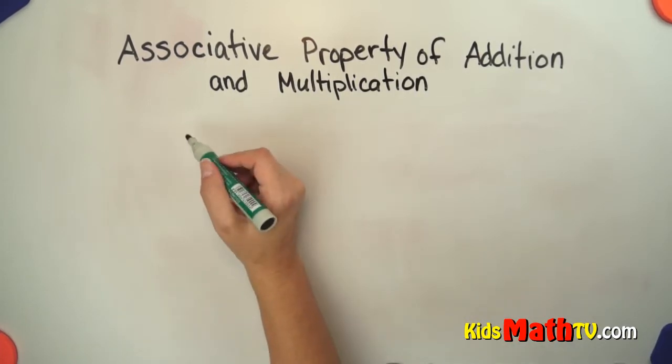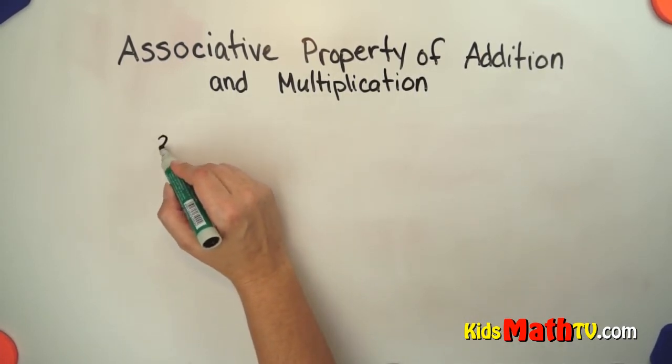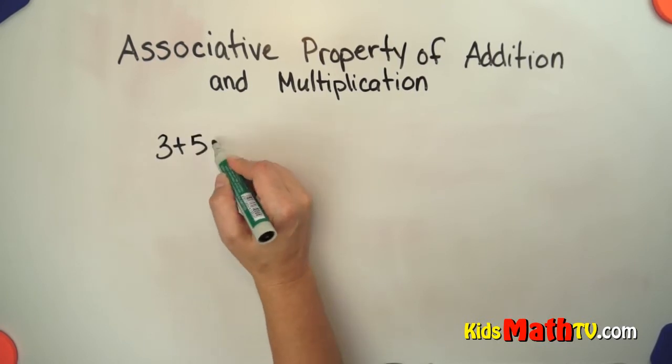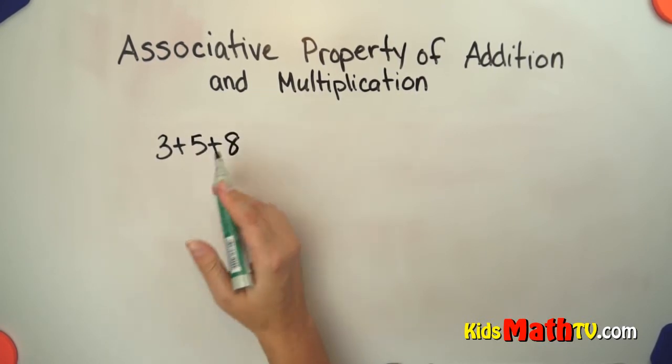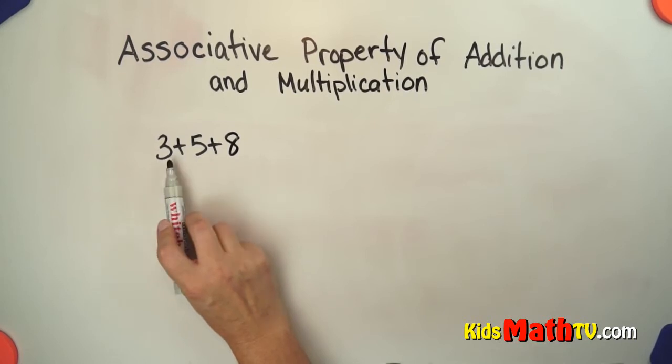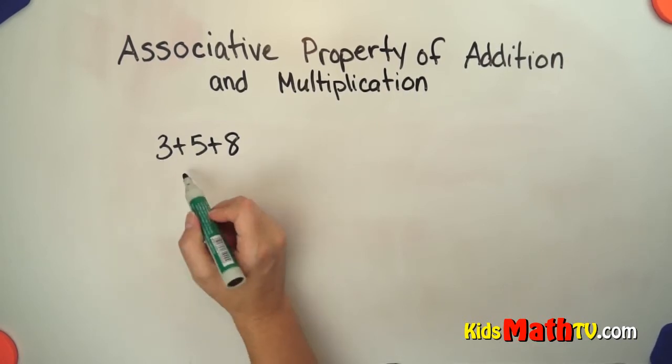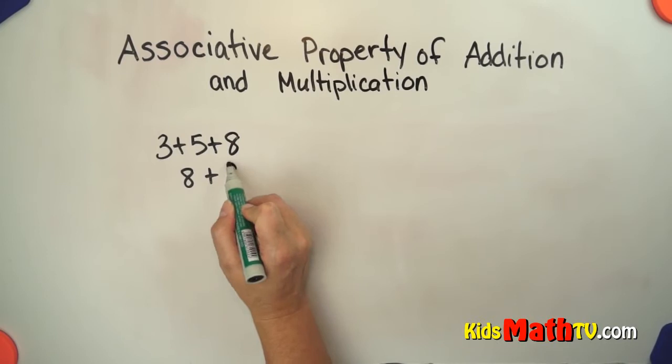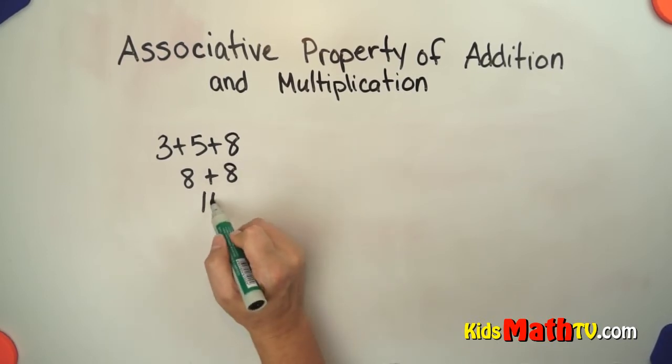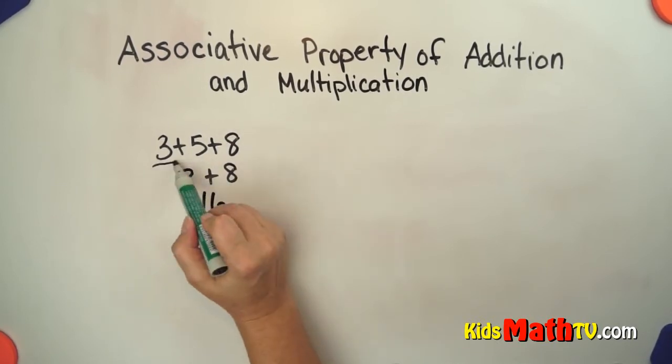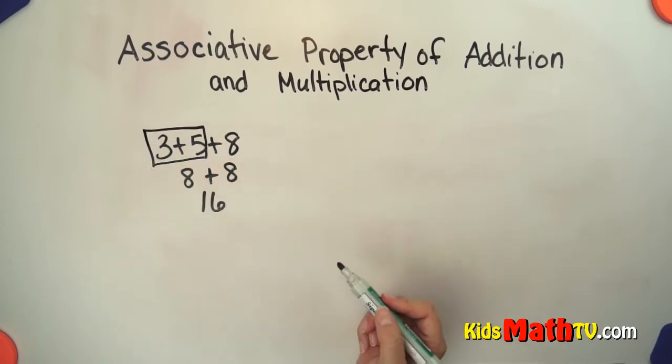So for example, if we start with addition we have 3 plus 5 plus 8. We can group the 3 and the 5 together first and do 3 plus 5 is 8, add that to 8, and we get 16. So we grouped the 3 and 5 together first.